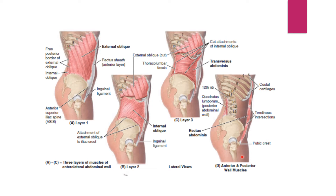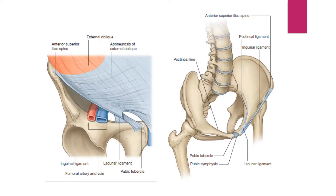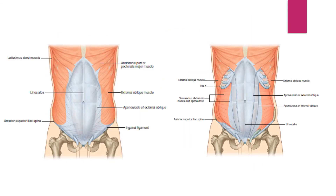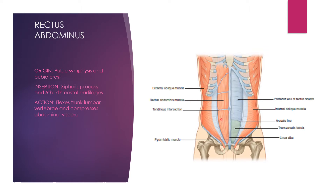Now the muscle that we have as the topic for today is the rectus abdominis muscle. The three flat muscles of the anterolateral abdominal wall — external oblique, internal oblique, and transversus abdominis — when they form the aponeurosis at the mid-clavicular line, these aponeuroses are going to cover anteriorly and posteriorly the rectus abdominis muscle. As they cover this muscle they intervene and make a strong midline raphe that is called the linea alba.